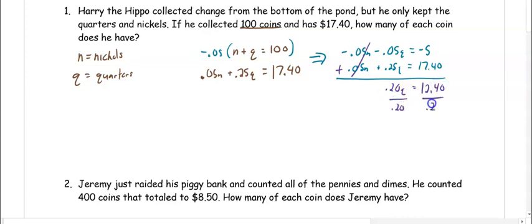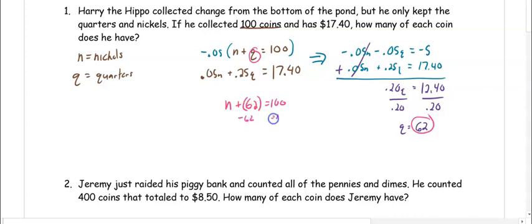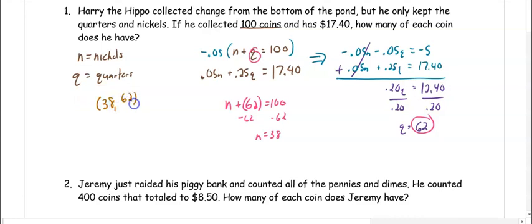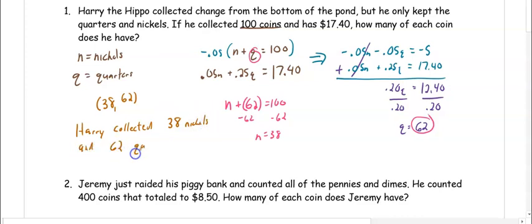We divide by 0.20 and we get Q equals 62. So now we take 62 and substitute in for Q. Using the first equation to avoid decimals: N plus 62 equals 100. We subtract 62 from both sides and get N equals 38. Our ordered pair is 38 comma 62. Harry collected 38 nickels and 62 quarters.